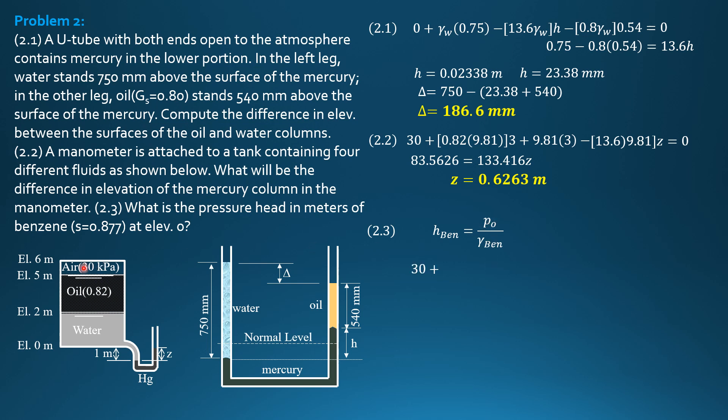So to solve for Po, sum up pressure from here, 30 plus 0.82 times 9.81 times 3. Then plus 9.81 times 2 only to reach elevation zero. Then equals pressure at elevation zero. So the pressure at elevation zero is equal to 73.7526 kilopascals.